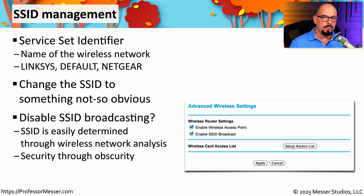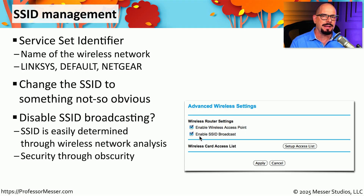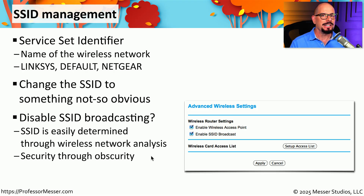If you want to remove that wireless network from the pull-down list, you can disable the SSID broadcast — there's usually a configuration option within your wireless device to enable or disable SSID broadcast. However, this is not a security control because it doesn't prevent somebody from connecting to the network if they know the name; it only prevents the name from showing up in a list of wireless networks. This is more of an administrative function than a security function, and it's sometimes referred to as security through obscurity — making the process more obscure is not actually making it more secure.